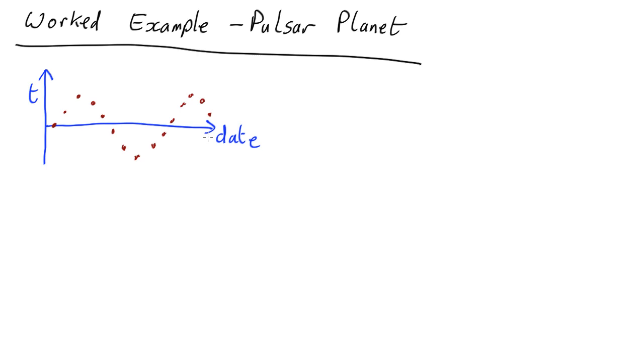So evidence for a planet orbiting the neutron star. What can we work out about the planet? Well, the first thing we can work out is the period. The period would be from there to there, or from here to here, from peak to peak or trough to trough, or from where it crosses the zero axis going up to next time it crosses the zero axis in the same direction.